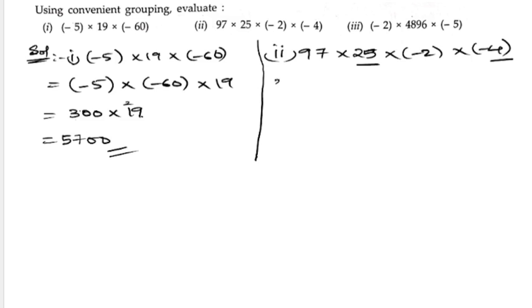25 times minus 4 is -100, times minus 2, times 97. Minus times minus is plus, so 100 times 2 is 200, times 97.